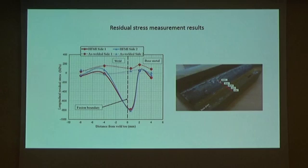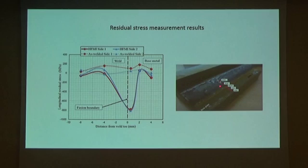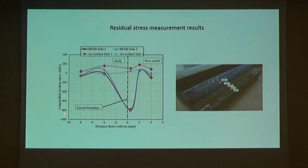We also investigated and measured residual stresses in front of the weld toe at three different locations at 0.5 mm intervals, and also two measurements on top of the weld. Here you see an example of residual stress measurement results for longitudinal residual stresses. We recorded more than 800 megapascal compressive residual stresses very close to the weld toe for HFMI treated samples compared to as-welded samples.